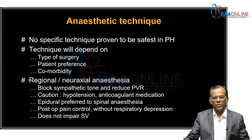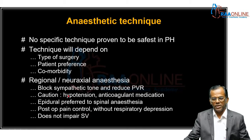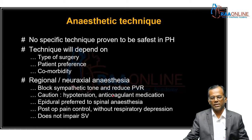Wherever possible, you can use regional and neuroaxial anaesthesia because it blocks the sympathetic tone and reduces the pulmonary vascular resistance. It also helps in post-operative pain control without causing any respiratory depression. But the problem is it can cause hypotension and hence decreased RV perfusion. You will also have to be careful because these patients might be on anticoagulants, and the placement of central neuroaxial blocks can get complicated because of that.